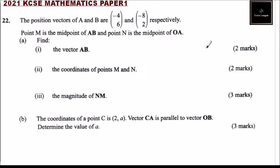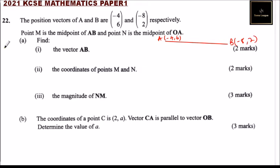We can make a sketch to guide us. We have point A with coordinates (-4, 6) — because this is a position vector — and for B it is (-8, 2). We can approximate where the origin is, and draw these position vectors with their directions. M is the midpoint of AB, so M is roughly there.